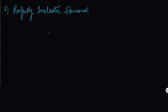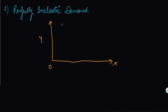The second degree is perfectly inelastic demand. To clarify the terms: perfectly elastic means elasticity equals infinity; inelastic means zero. Elastic demand means elasticity is greater than one, and inelastic demand means elasticity is less than one.